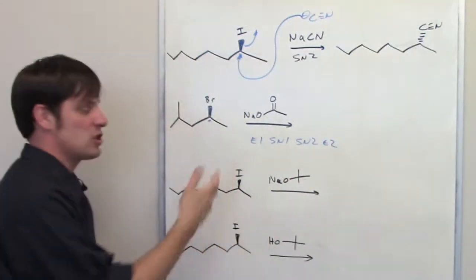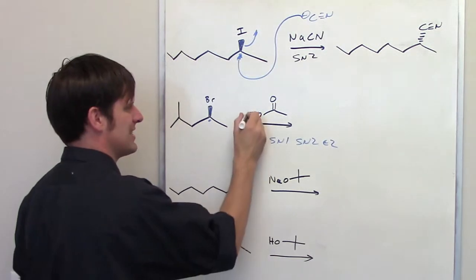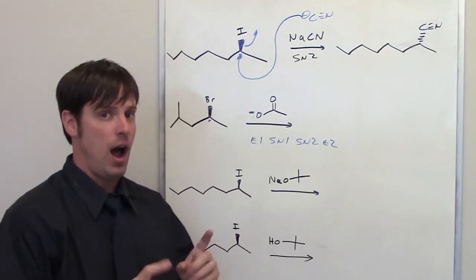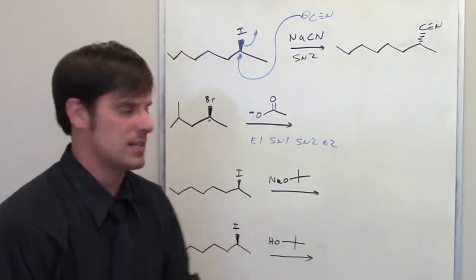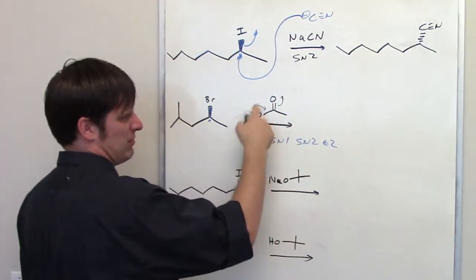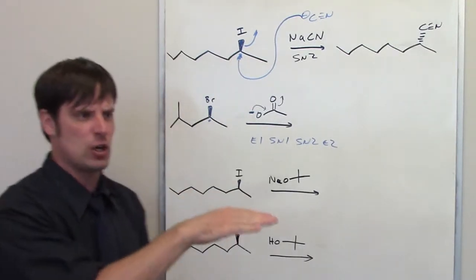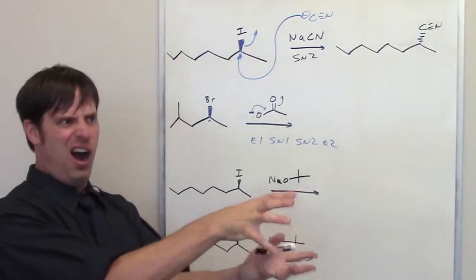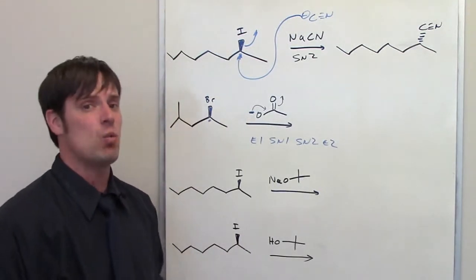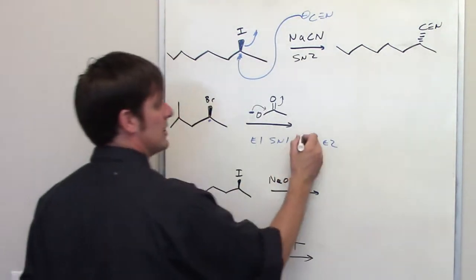Then I go to my next question: is my nucleophile/base strong or weak? I've got a sodium there. Sodiums, potassiums, lithiums — you can essentially erase and pretend they're a negative charge, because that's how they'll behave. So you might be tempted to think that's strong because it has a negative charge. But is it a localized negative charge? It's not. This negative charge can resonance-delocalize — you could have that form a double bond there and have that go up there. That is a delocalized negative charge, which means it's weak. It's a resonance-delocalized, laid-back negative charge. Weak starts with a 'wuh' sound, and so does the number one, so it's going to be a one-reaction, and I'll cross off my twos.